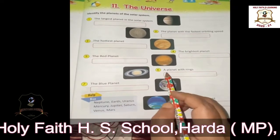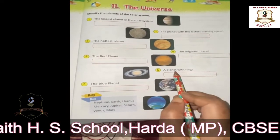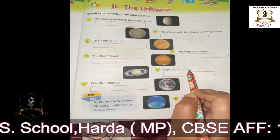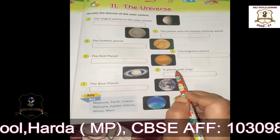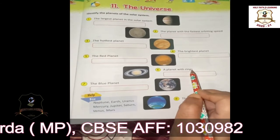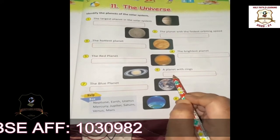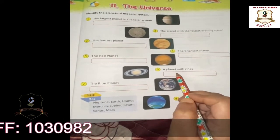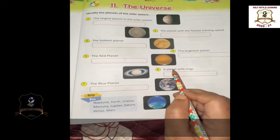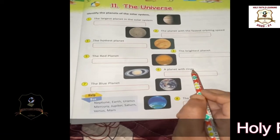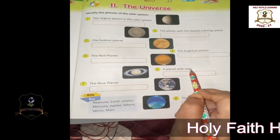Sixth: a planet with rings. Which planet has rings? The answer is Saturn. Saturn is a planet with rings.